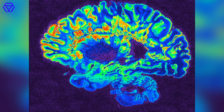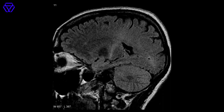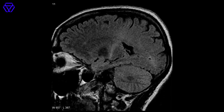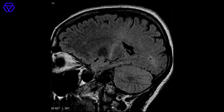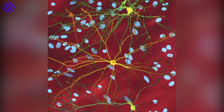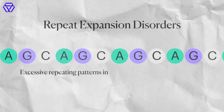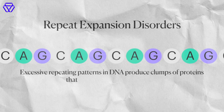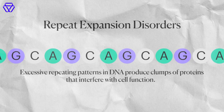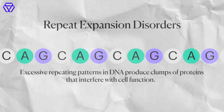ALS belongs to a family of diseases called repeat expansion disorders. Although ALS and Huntington's disease are most commonly known, over 40 types of repeat expansion disorders exist, causing neurodegeneration and other symptoms in patients. In these disorders, excessive repeating patterns in DNA produce clumps of proteins that interfere with cell function, like in Huntington's, where the sequence CAG is repeated many times, resulting in abnormal protein production.